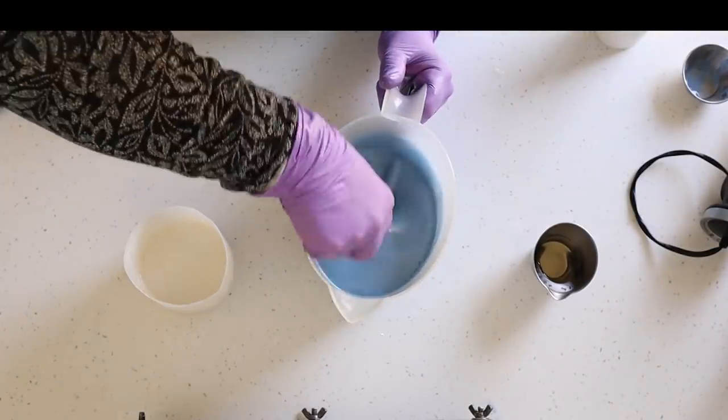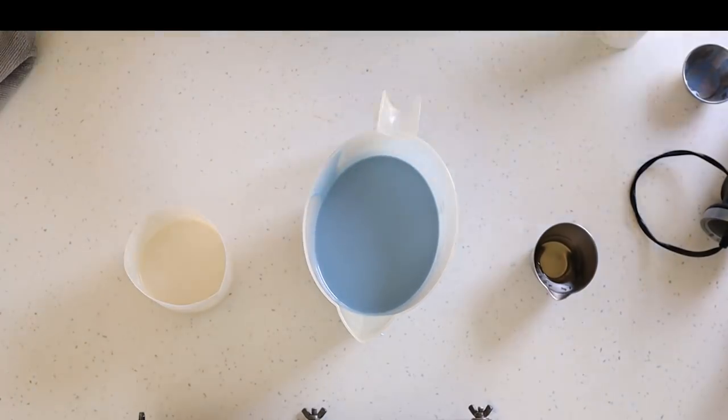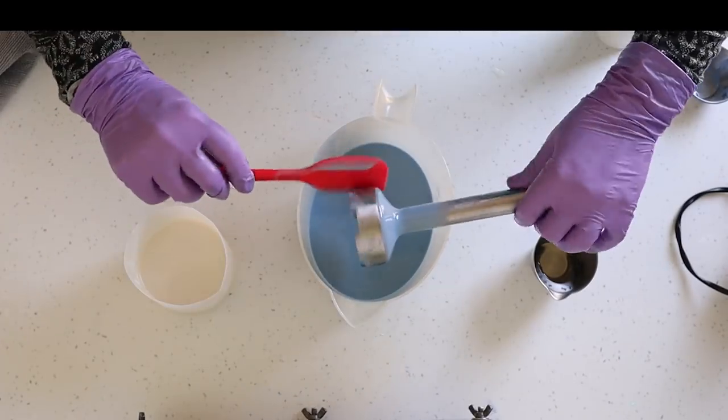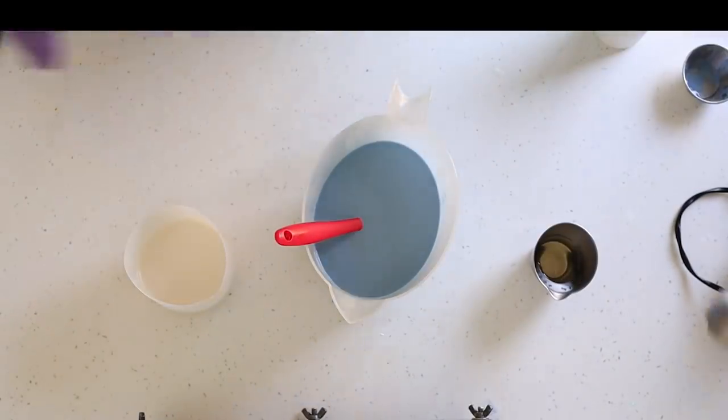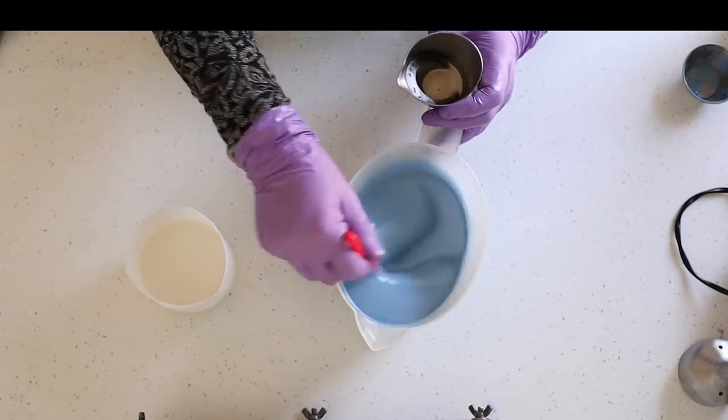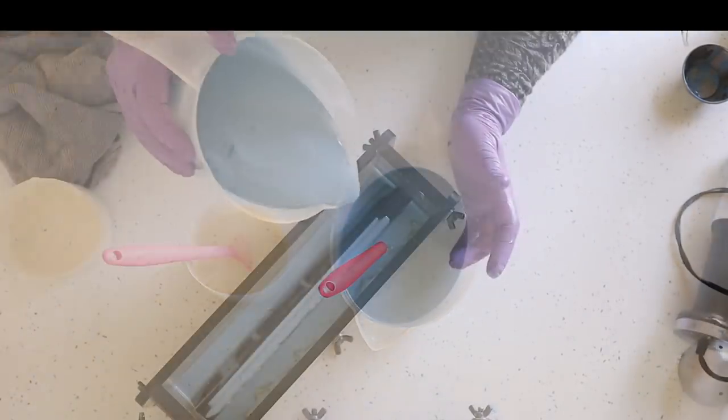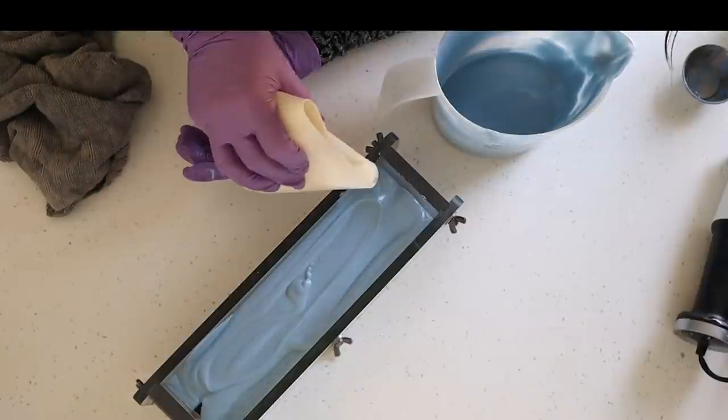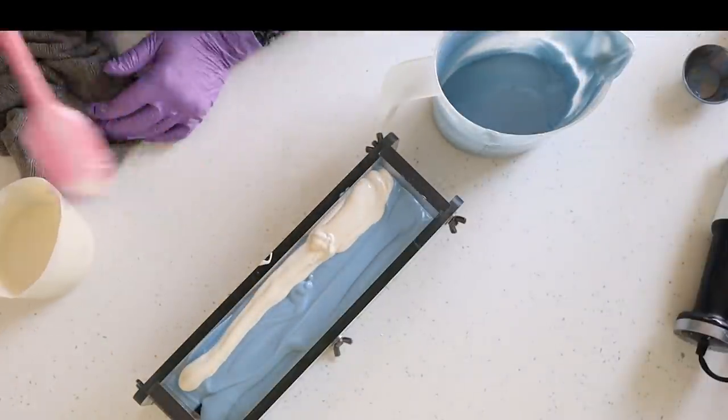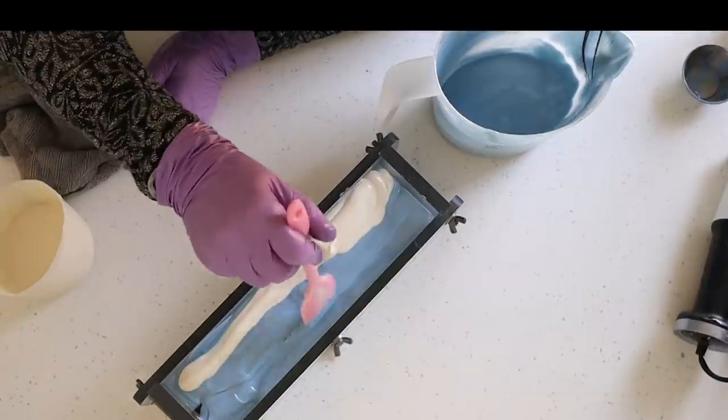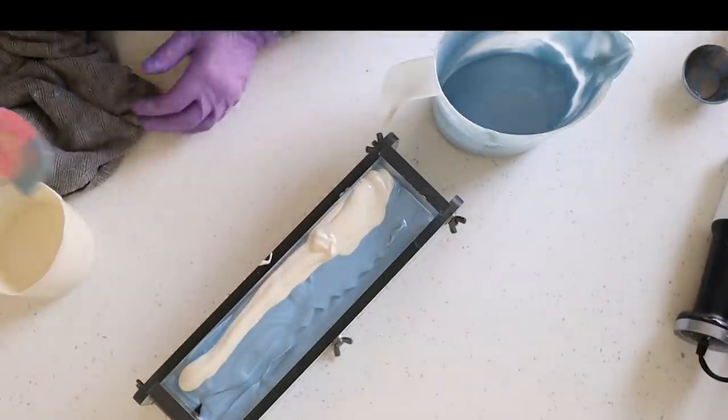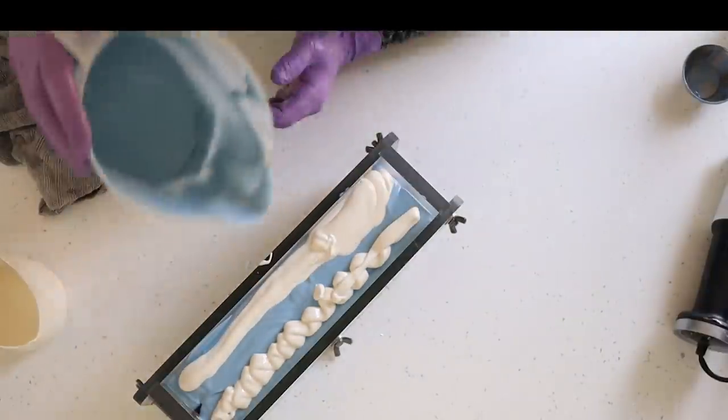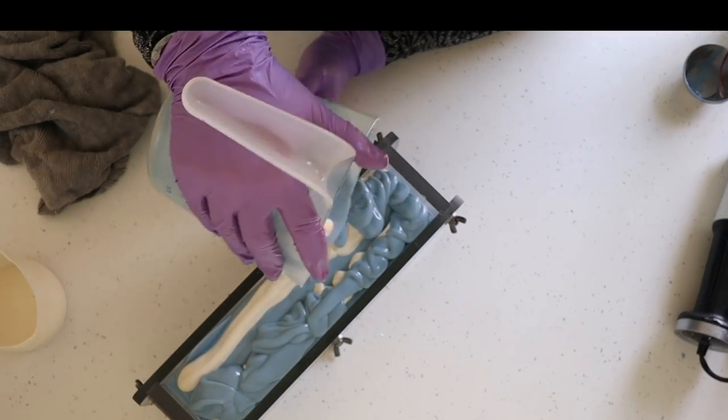I then just finished off the inside of the soap by mixing up the rest of my batter—the majority of it in the blue color that I want for my sky and then a smaller proportion just in white to create the clouds. I did have my batter at a reasonably thick trace for this pour. I probably could have done with it a little bit thinner but I wanted to make sure that the clouds suspended in the blue sky rather than just mixing all in and not being very distinct.